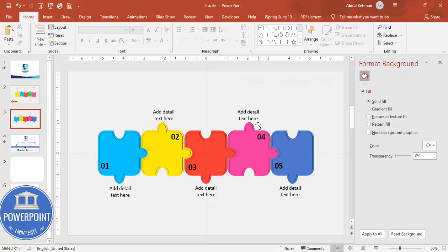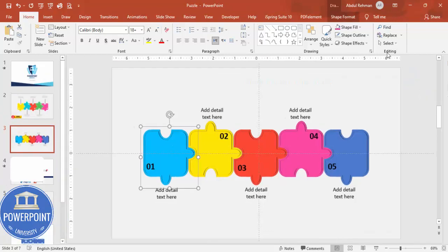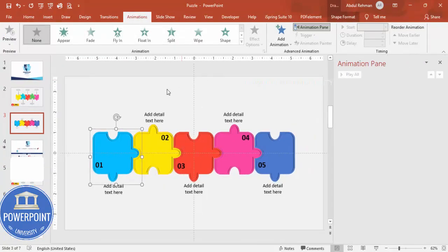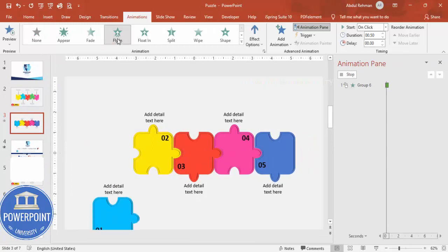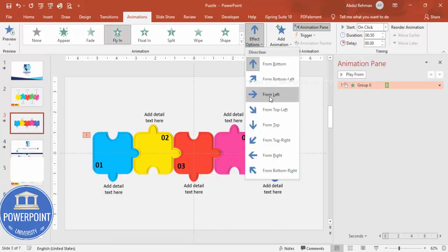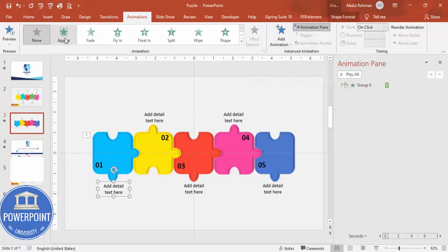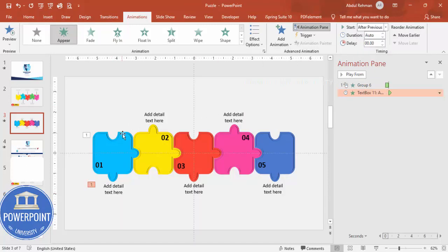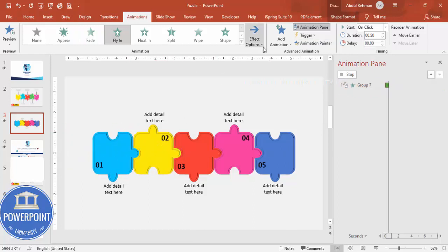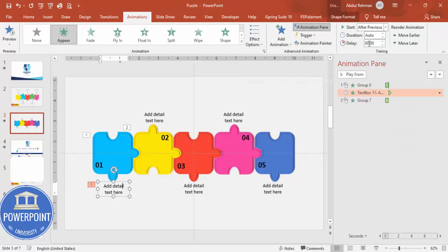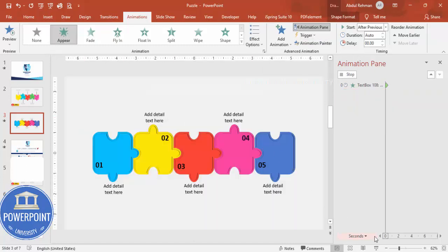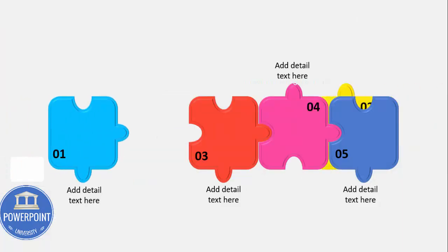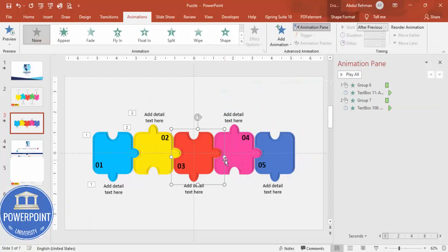Add simple animations to bring the pieces in one by one. Go to Animations, open the Animation Pane, and apply a Fly In animation. Set the direction — for example, from left — and set each animation to trigger After Previous so the pieces appear sequentially. When played, you'll see piece one fly in, then piece two, and so on through all five, along with their detail text.